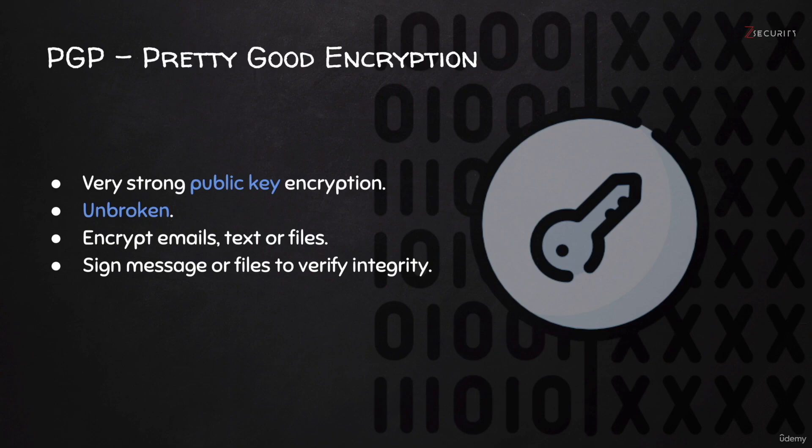In this lecture, I want to explain how PGP works in general, and then in the next lectures we'll see how we can use it to encrypt all sorts of data and how to use it to sign and verify integrity. PGP is a public key, or asymmetric encryption. To understand how that works, let's first have a look at the other traditional type of encryption: symmetric encryption.